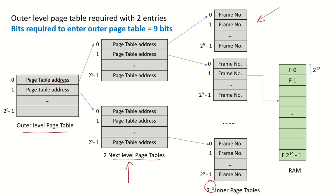The outer-level page table keeps track of both next-level page table addresses, and if required there can be more entries. Since it takes 1 frame and one frame holds 2^9 entries, again 9 bits will be required for the outer-level page table as well.